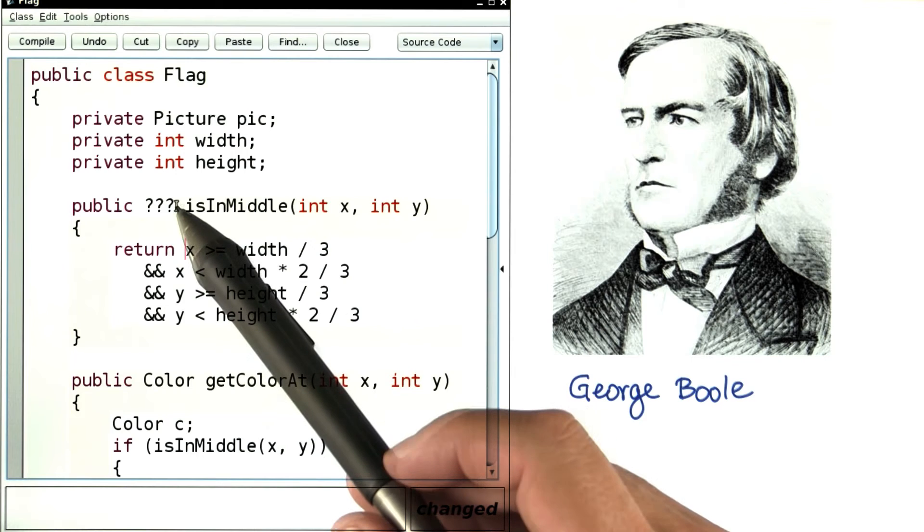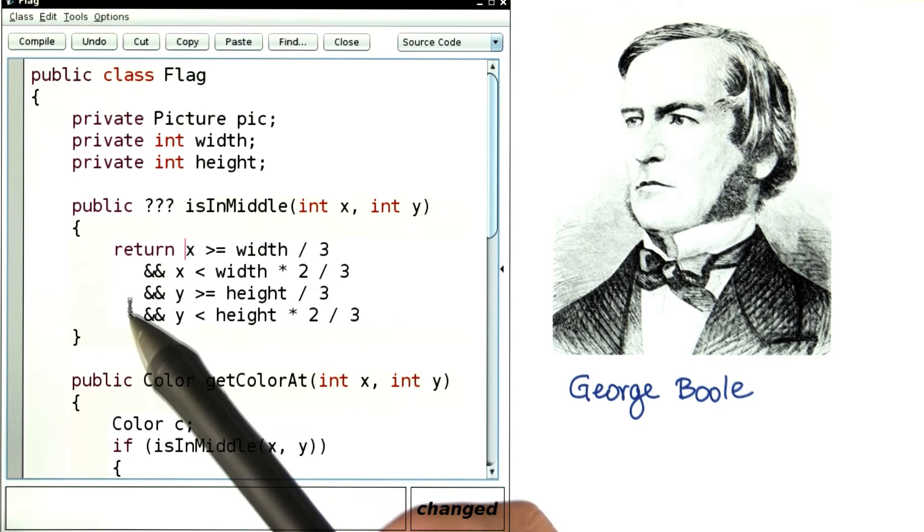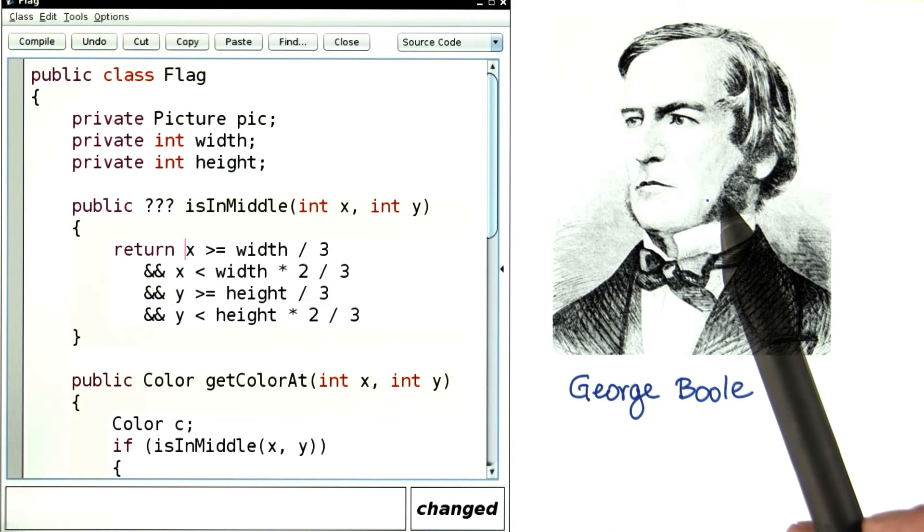There's just one catch. We have to specify a return type for this method. And what is this thing that's being returned? Well, it's either true or false. In Java, the type that has two values, true and false, is called Boolean in honor of our friend George.